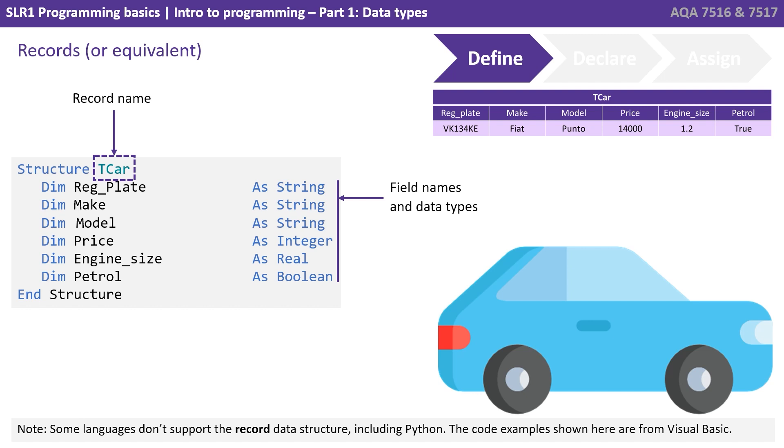Here's an example from Visual Basic. Now, note that some languages don't support the record data structure, including Python. So that's why we're showing examples here from VB. But it is something you need to be aware of for the exam. So we're looking here at defining the record structure. You can see here in VB, we start off the word structure and then give a name. So we've got T-car and we end the structure with the word end structure. In between there, we've listed each of the individual variables that we want to be part of this structure and their associated data types. We've now correctly defined the structure for this record.